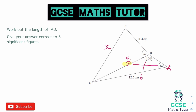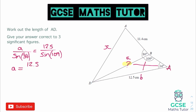Putting that into the sine rule: a over sine(A) equals b over sine(B). So we get a over sine(34°) equals 12.5 over sine(109°). We have one step to rearrange — we multiply both sides by sine(34°), so sine(34°) goes up onto the numerator. That gives us 12.5 × sine(34°) all over sine(109°).